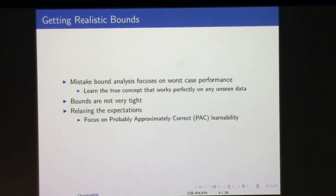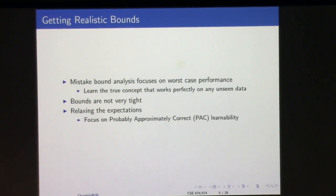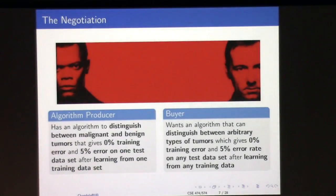This theory was proposed by Leslie Valiant in 1984, and he received the Turing Award around 2010-2011. It's a very powerful framework for understanding the properties of machine learning algorithms.